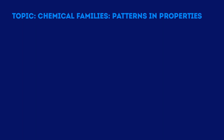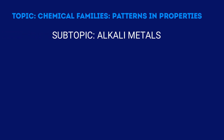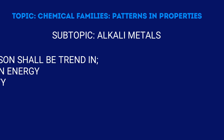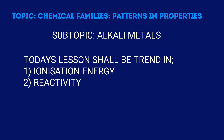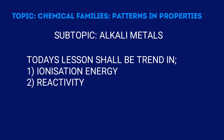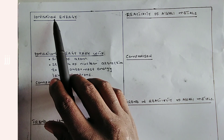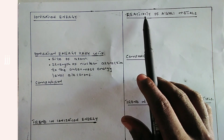Welcome learners. Today we will look at the topic of chemical families, pattern properties, a continuation of the previous subtopic which was alkali metals. Previously we looked at the trend in properties of alkaline metals which include atomic radius, conductivity, and also melting point. Today we want to look at two properties: ionization energy and reactivity of alkali metals.